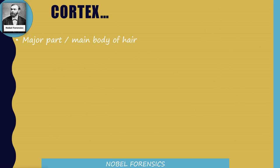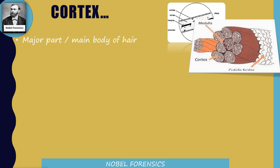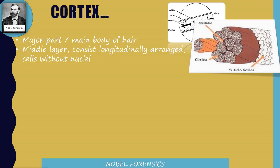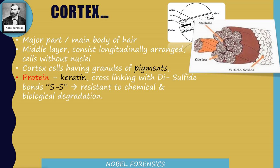Coming to the cortex — this is the major, main body of hair. It is the middle layer consisting of longitudinally arranged cells without nuclei. So in cortex cells there is no nucleus, meaning we do not get nuclear DNA from the cortex. However, there is mitochondria, so we get mitochondrial DNA from the cortex. We get nuclear DNA only from the follicular tag — the root tag of the hair. Cortex cells have granules of pigment which give color to the hair. Keratin protein is present in the cortex, cross-linked with disulfide bonds, making hair resistant to chemical and biological degradation.